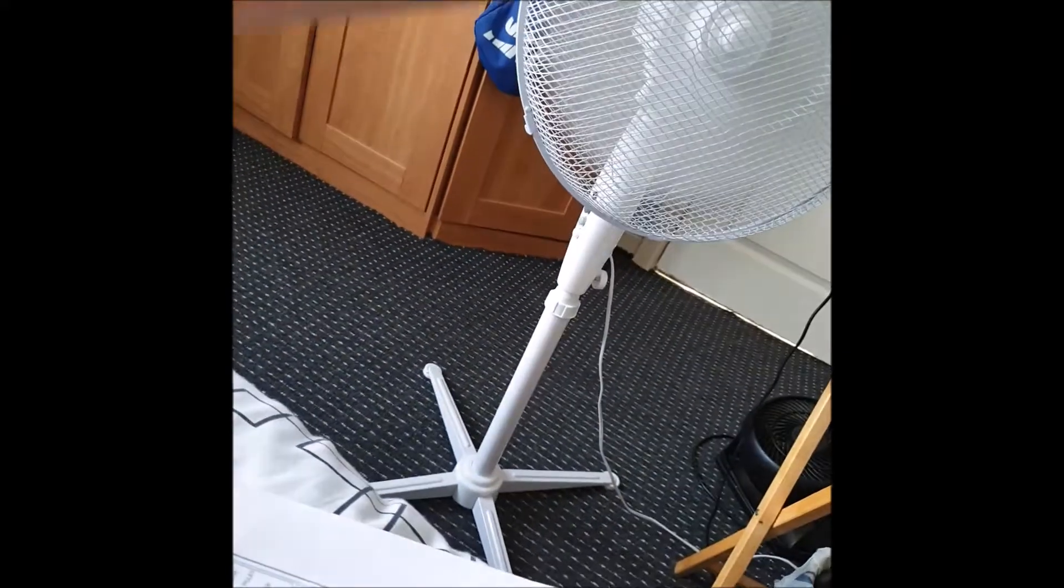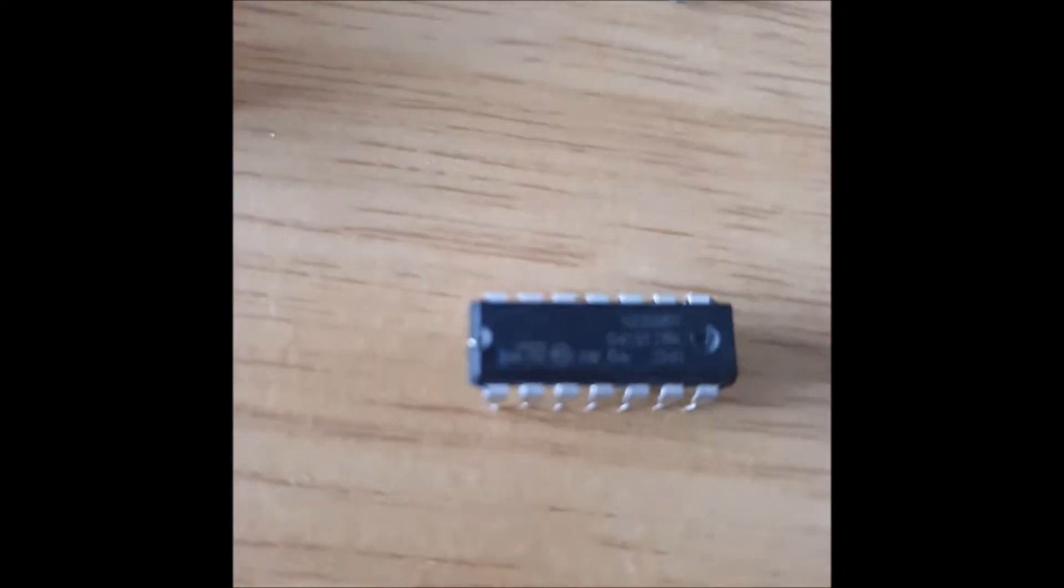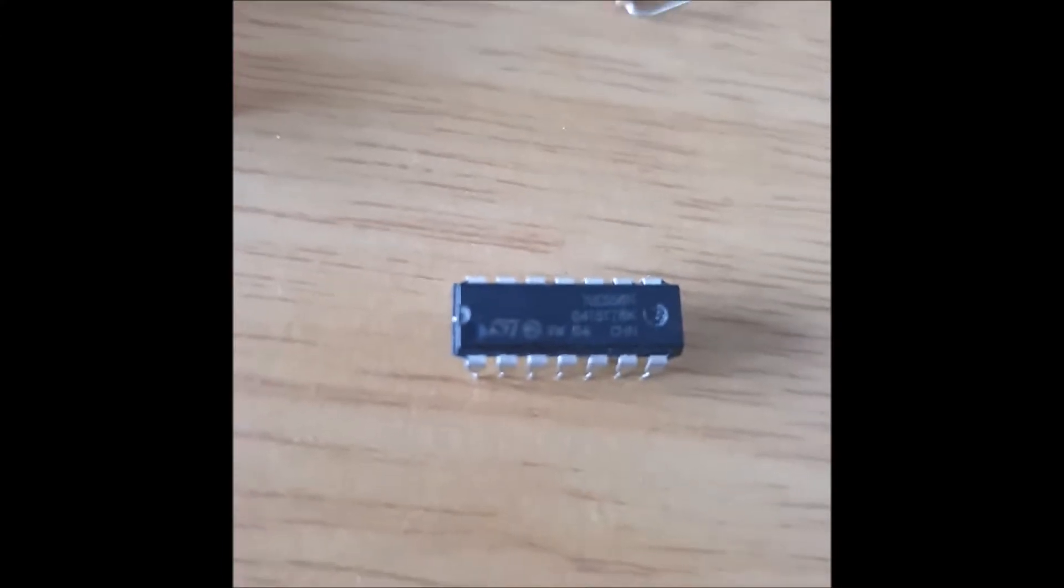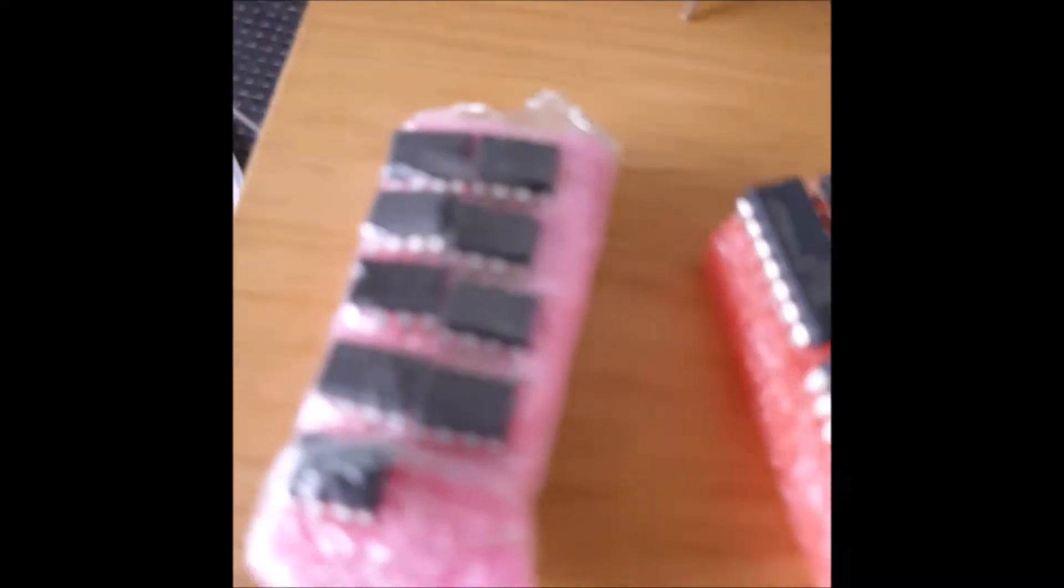This is what you need: jumpers, got them. Nine volt battery, I'll find that when I need it. Battery clip, got that. 556 timer, got loads of them. Or you can also use two 555 chips which I've also got loads of. 1k ohm resistor, which is that. If your eyes aren't good enough to work out the color, just zoom in, take a picture and then you can see it.